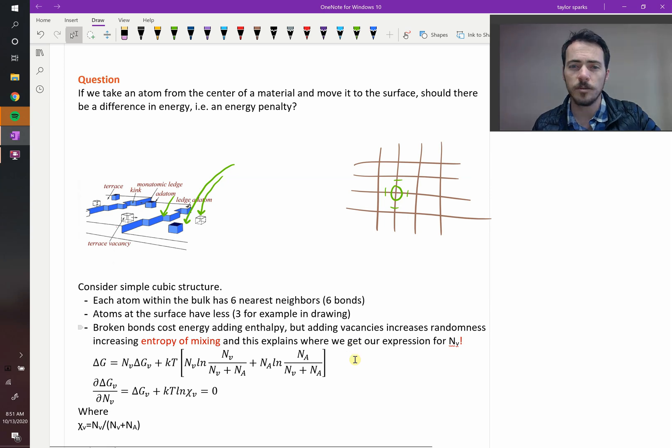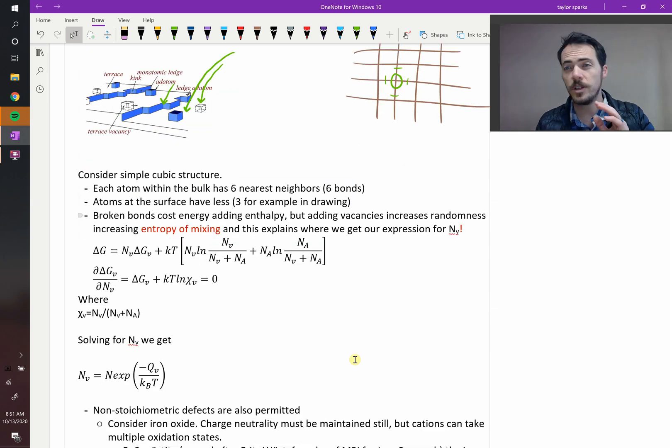So why is entropy driving this? Well, think about it. Even though it did cost enthalpy, when you put a vacancy in that structure somewhere in the middle, that increases the randomness. The randomness of your crystal has increased because instead of it all being easy to describe, there's an atom on every position, now you've got a vacancy. And that vacancy can maybe move around. And that is a degree of disorder which you didn't have before.